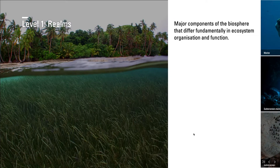The top level of the typology are the major components of the biosphere that differ fundamentally in ecosystem organization and function. Sometimes these components are clearly distinct — for example, seagrass is in a different realm than terrestrial vegetation — but some ecosystems are located in between, for example, the sandy shores in the intertidal areas.